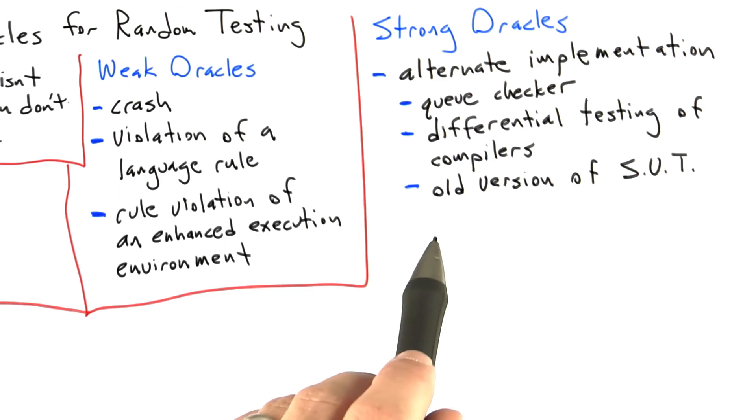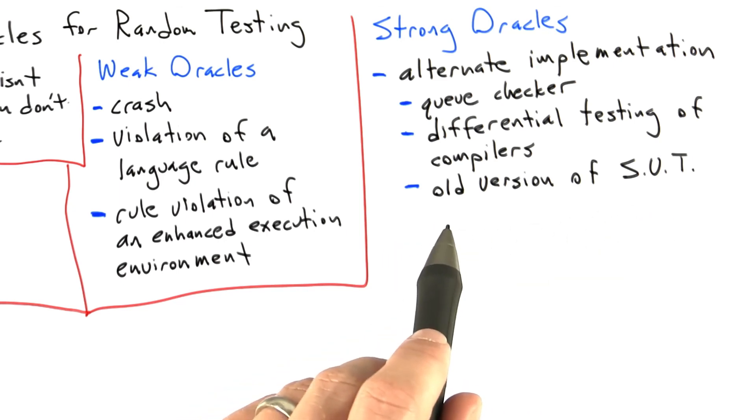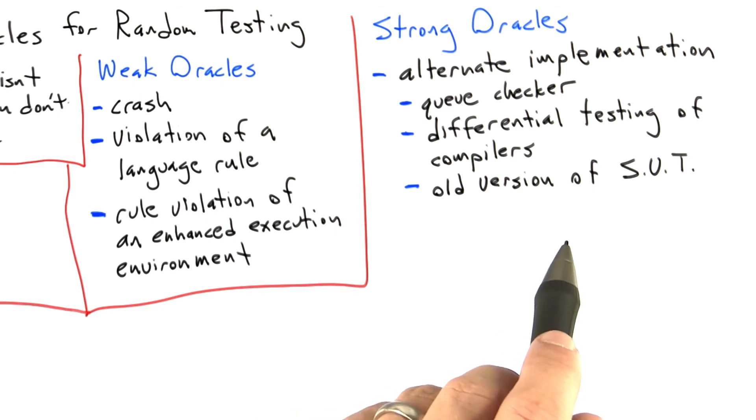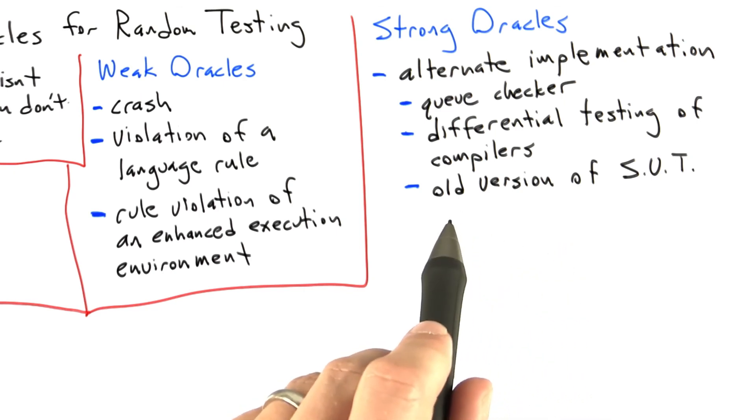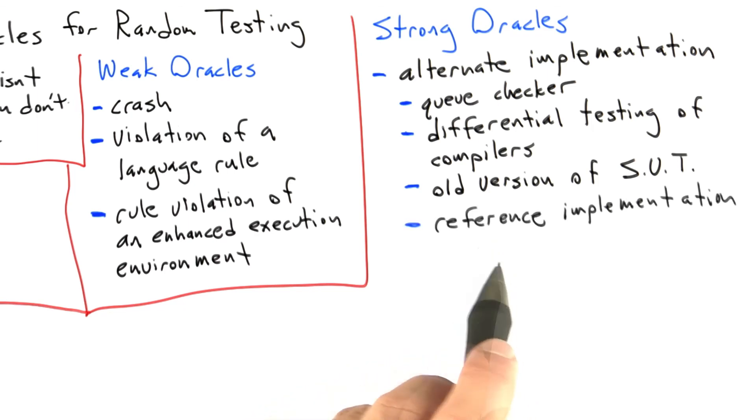Another kind of old version oracle that tends to be extremely effective is after a refactoring change. That is to say, a change of our source code base that isn't intended to have any functional effect. We can do differential testing of the versions before and after refactoring, and in that way try to get a pretty good idea that the refactoring didn't actually break the code.